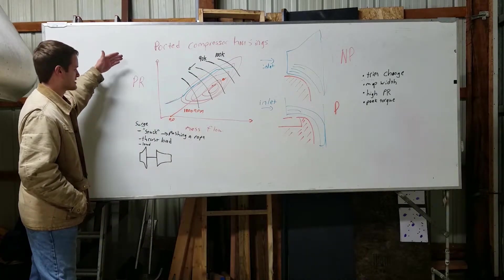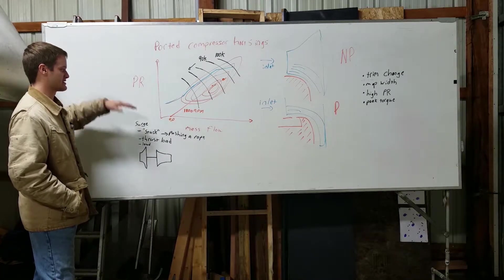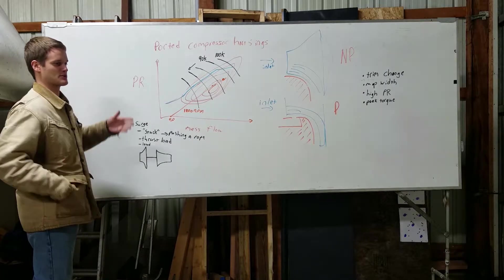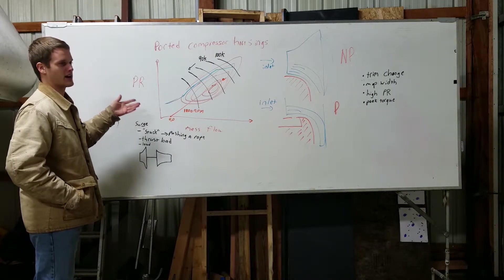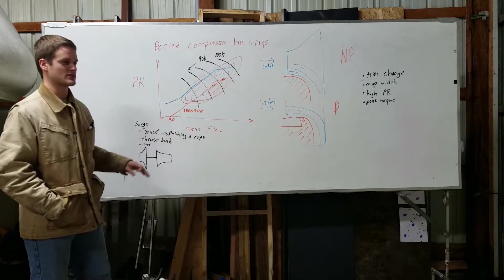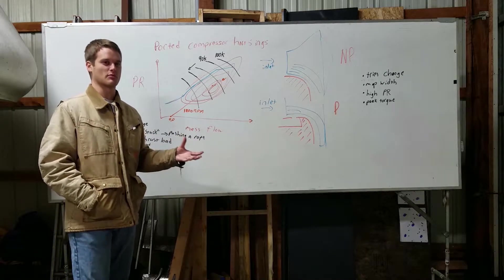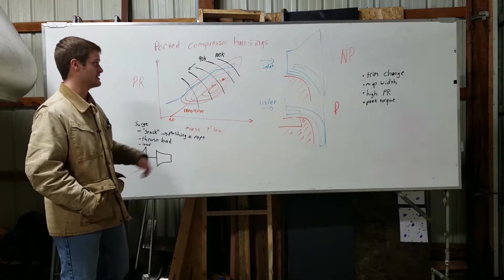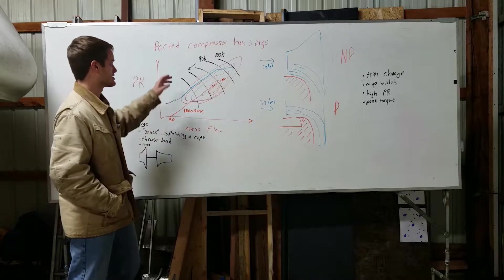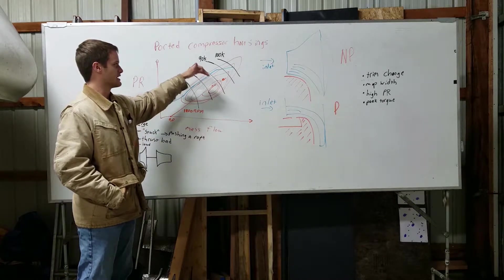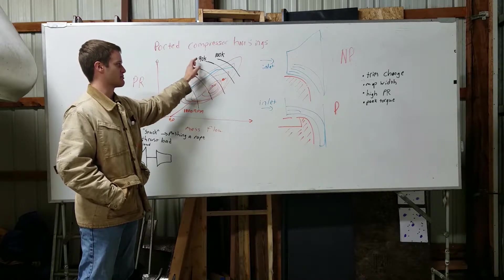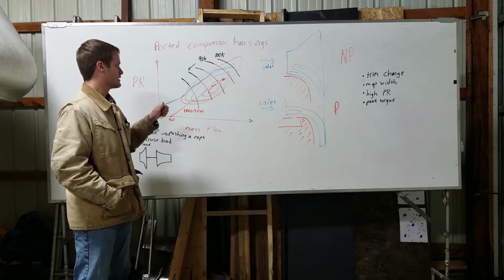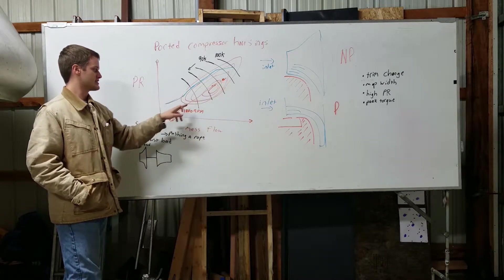So anyway, looking at our compressor map, we of course have pressure ratio on the y-axis and on the x-axis is mass flow. You can think of this basically as literally how much pressure your boost gauge reads divided by atmospheric pressure, and mass flow is actually how many kilograms of air per second you're flowing into your engine. The black lines here represent your speed lines. On your turbo, you're at 90,000 RPM. That's where it'll run on the compressor map.